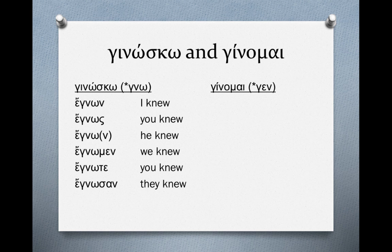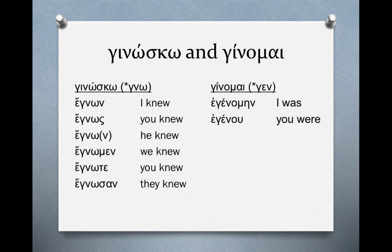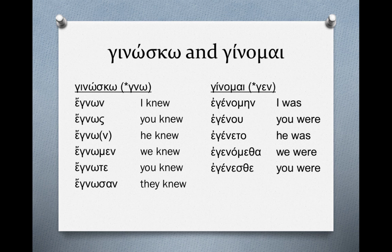We see a recurring theme: this forms directly from the root of ginosko, which is gno. It has the augment, takes the secondary endings, and translates as past undefined action. For ginomai, the first singular would be egenomen, translated 'I was.' Egenou means 'you were,' and egeneto means 'he was.' These endings look a little different because these are the middle-passive endings, since ginomai is deponent in the past tenses as well. Egenometha means 'we were,' egenesthe means 'you were,' and egenonto means 'they were.'